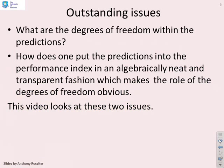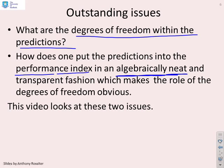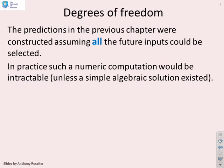So, what do we need to know? What are the degrees of freedom within the predictions? And how do you put these predictions into the performance index in an algebraic neat and transparent fashion, which makes the role of the degrees of freedom obvious? If we can see exactly how the degrees of freedom affect the predictions and therefore how they affect the performance index, then optimising performance becomes straightforward.